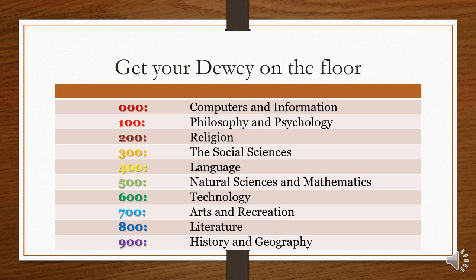Although you might look here to see what range is most relevant to your major, I don't expect you to memorize this table. One of the great things about the Dewey Decimal System is you can find books without knowing how the system works.